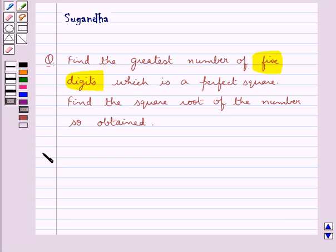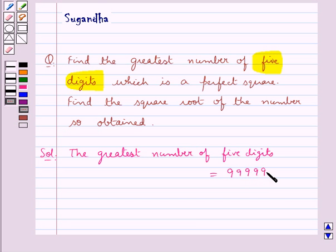Let's move on to the solution. Now the greatest number of five digits is 99999. Now this number is not a perfect square.